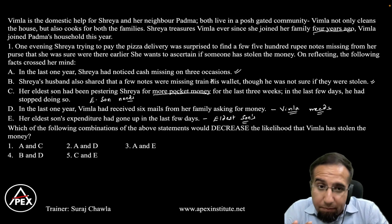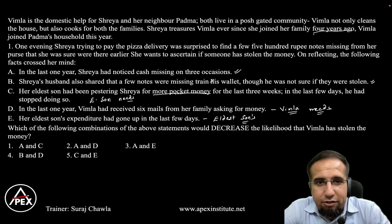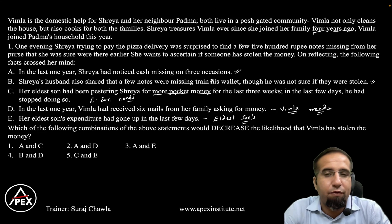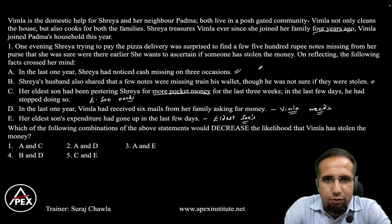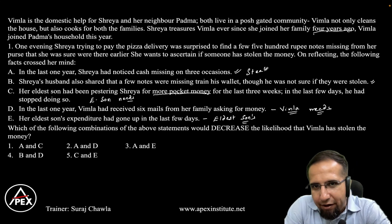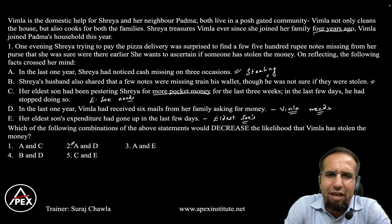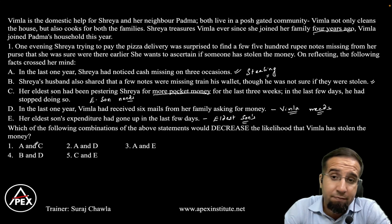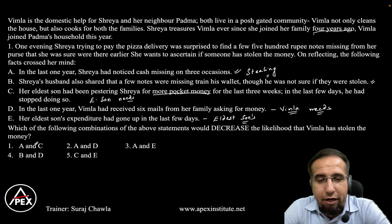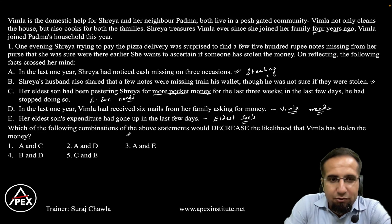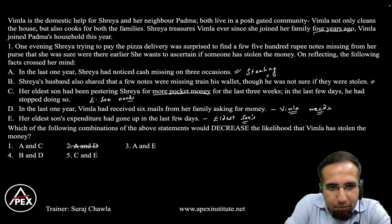The question asks: which combination of statements would decrease the likelihood that Vimla has stolen the money? To decrease Vimla's likelihood, we need evidence pointing to someone else. Option 1 is A and C — A shows stealing is evident and C points to the son's needs, suggesting the son is responsible, not Vimla. Option 2 is A and D — D highlights that Vimla needs money, which actually increases the likelihood of Vimla stealing. So we rule out option 2.